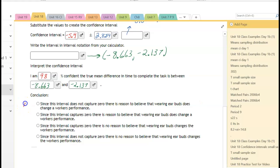And then we want to look at these conclusions. So if I read these, I'm going to label these A, B, C, D. Since this interval does not capture zero, that interval does not capture zero. So A is a possibility.